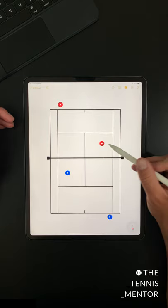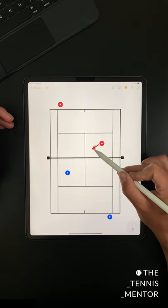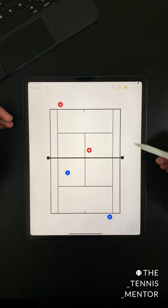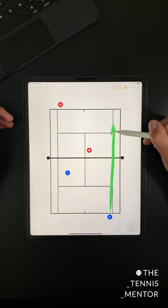And the third situation is if your volleying opponent shifts their position towards the centre of the court, then you're going to have a much bigger gap to hit your shot down the line.